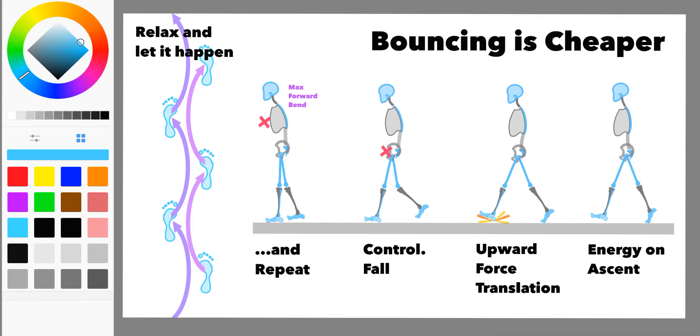It turns out that it's actually more energy efficient to move up and down, to bounce or to bob as we walk.